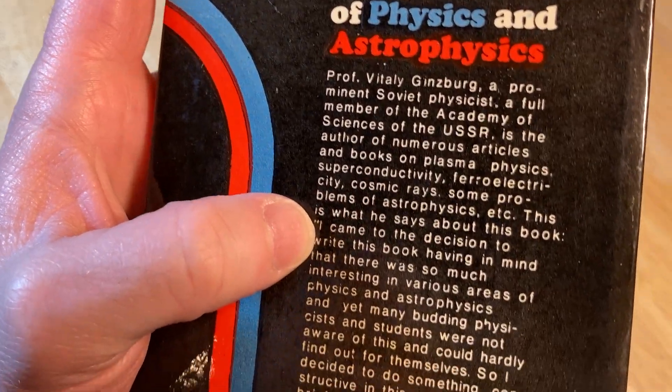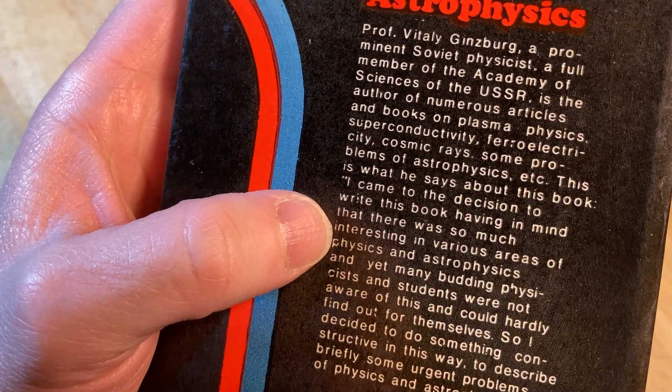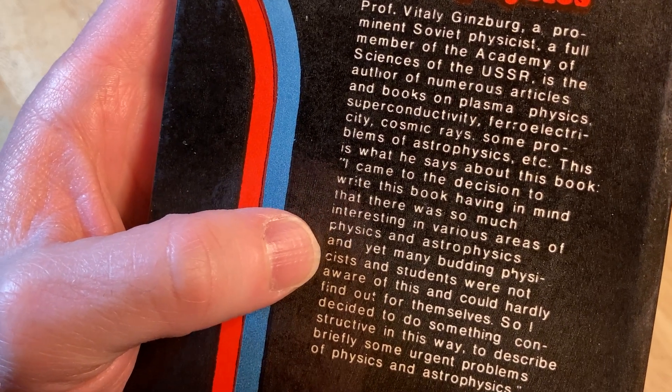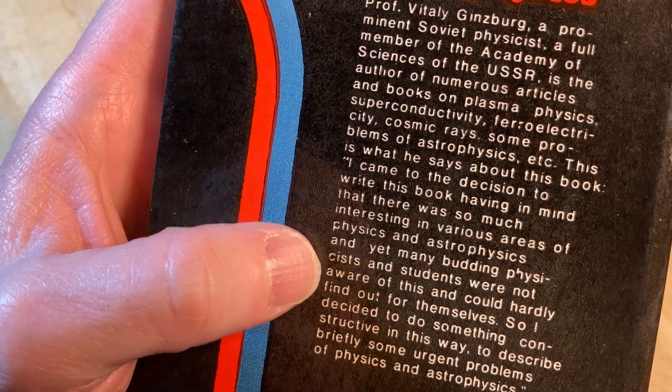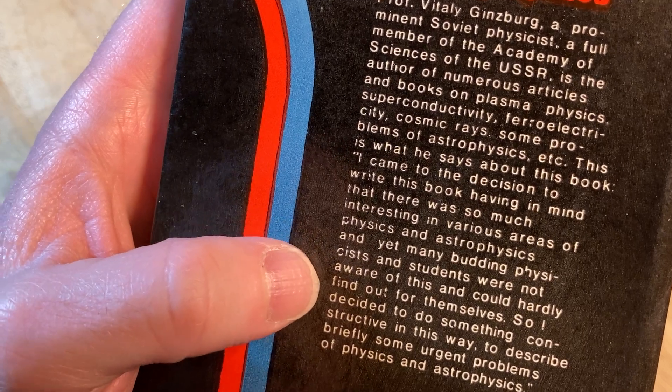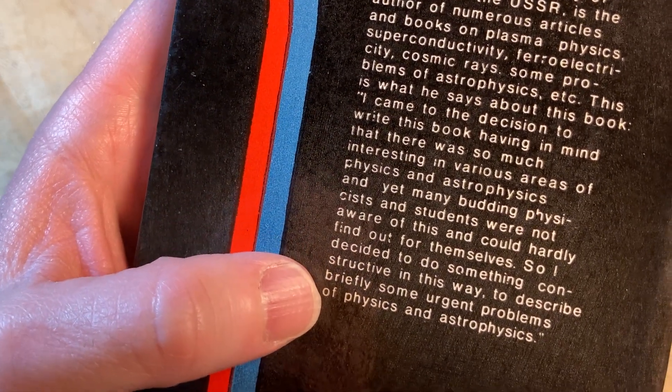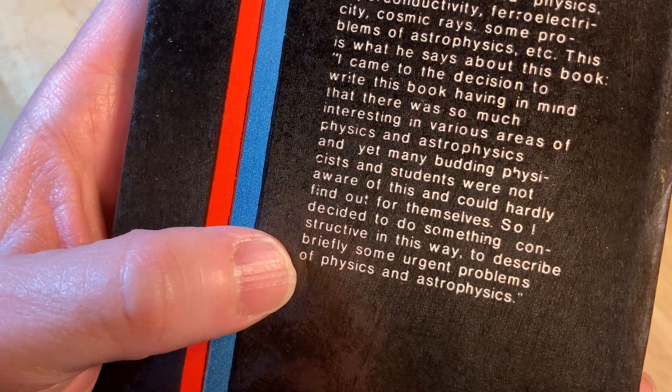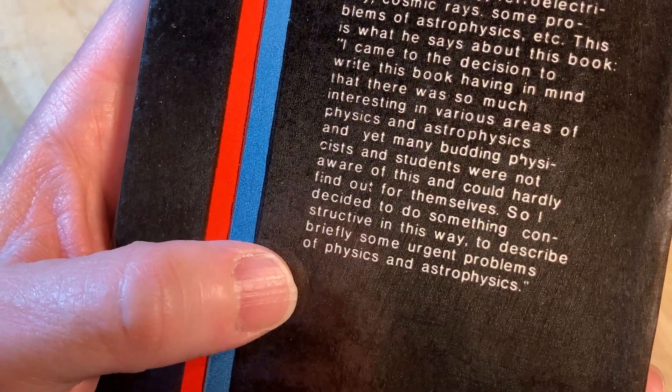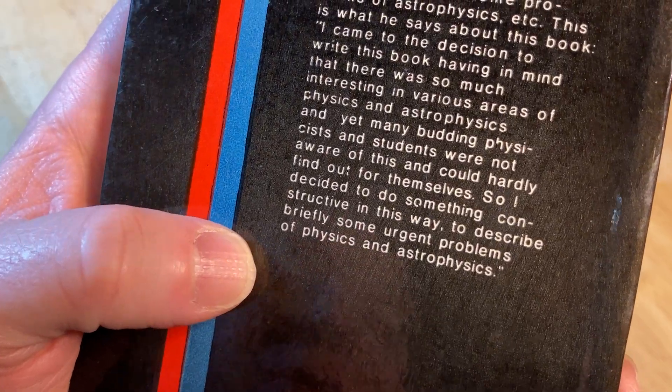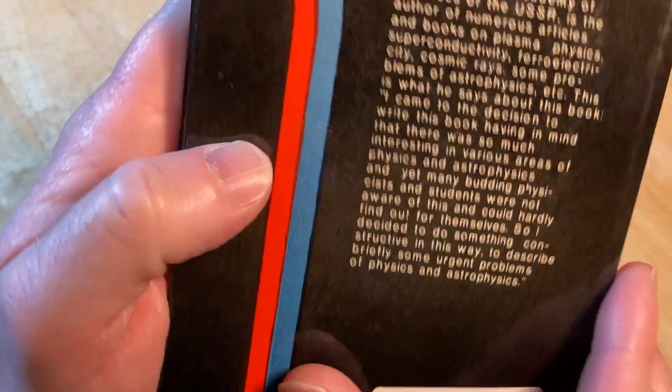This is what he says about the book. I came to the decision to write this book, having in mind that there was so much interesting in various areas of physics and astrophysics, and yet many budding physicists and students were not aware of this and could hardly find out for themselves. So I decided to do something constructive in this way, to describe briefly some urgent problems of physics and astrophysics.